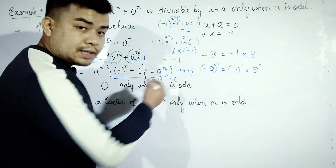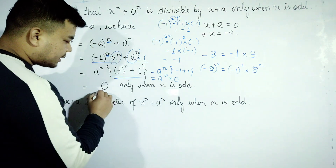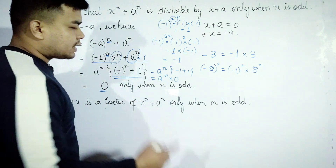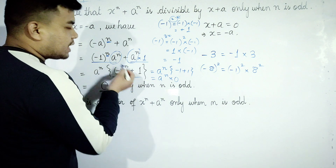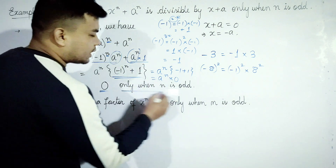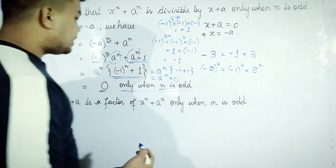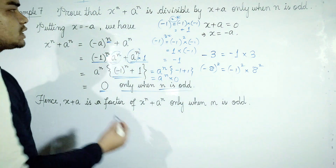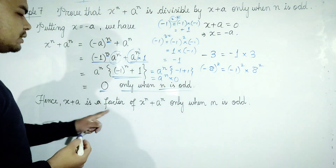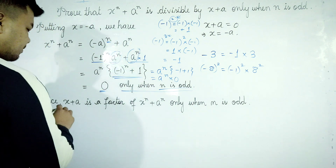Any number multiplied by 0 is 0. So x to the power n plus a to the power n equals 0 when x equals minus a, which means x plus a is a factor and x to the power n plus a to the power n is divisible by x plus a when n is odd.